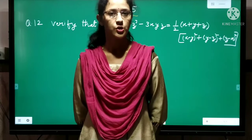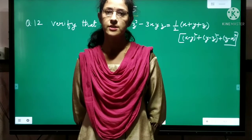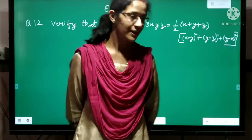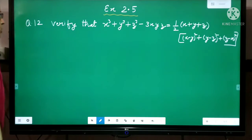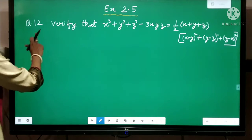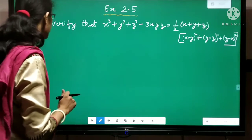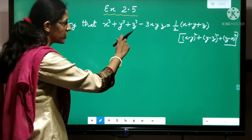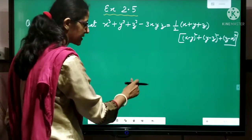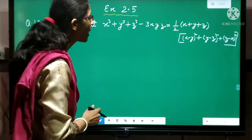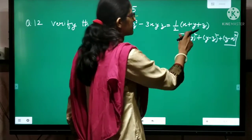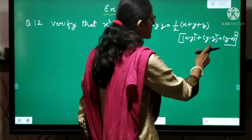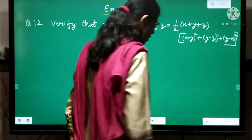Good morning students. In today's video we will discuss a very important question of exercise 2.5. The question is question number 12 of exercise 2.5, which is: verify that x cube plus y cube plus z cube minus 3xyz is equal to half multiplied by x plus y plus z, multiplied by x minus y whole square plus y minus z whole square plus z minus x whole square.